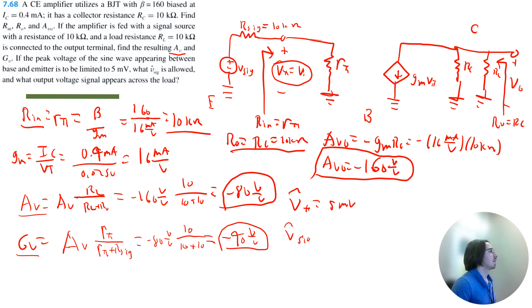And we can calculate v signal by, let me write the original equation. So it's v signal times Rin divided by Rin plus Rsignal. That's equal to the amplitude of vπ.